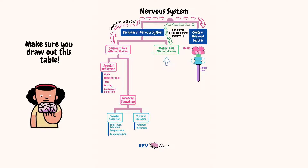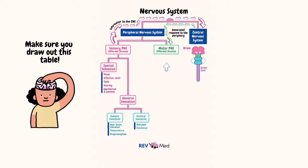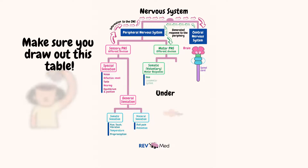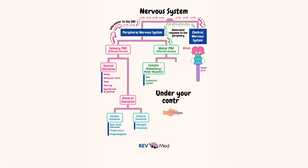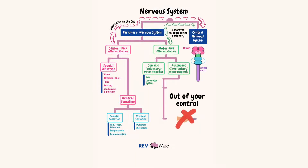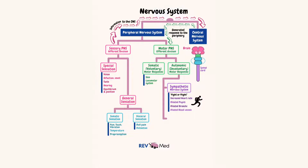Let's move over to the motor PNS. This is divided into somatic motor responses to the skin and the locomotor system that are happening under your control, and autonomic motor responses happening out of your control. The autonomic system is divided into two: the sympathetic nervous system — think fight or flight — and the parasympathetic nervous system — think rest and digest.